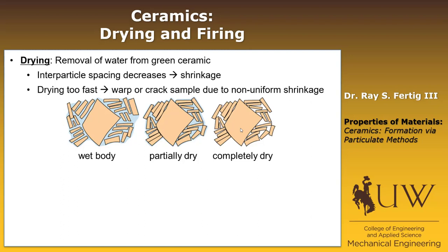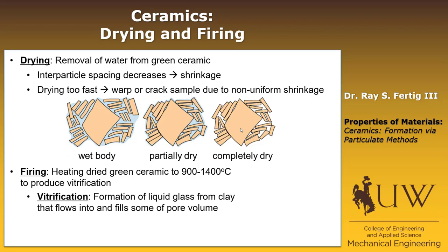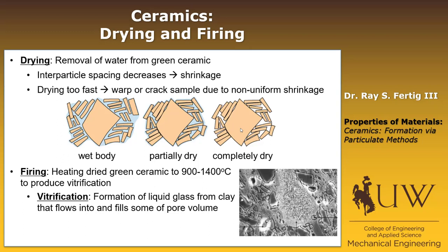Once it's dry, you move on to the firing process. Firing is basically heating the dry green ceramic up to between 900 and 1400 degrees C to produce what's called vitrification — the formation of a liquid glass from components in the clay. That liquid glass flows into and fills some of the pore volume. Here's a micrograph of porcelain: the silicon dioxide particle shown here is surrounded by glass that formed during the firing process, highlighted in green. So firing creates a liquid glass that acts as a strengthener and binder for all the particulates.